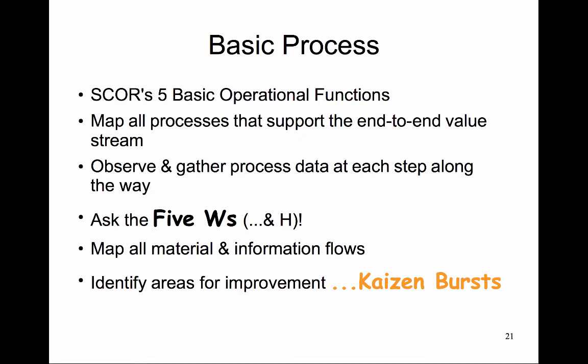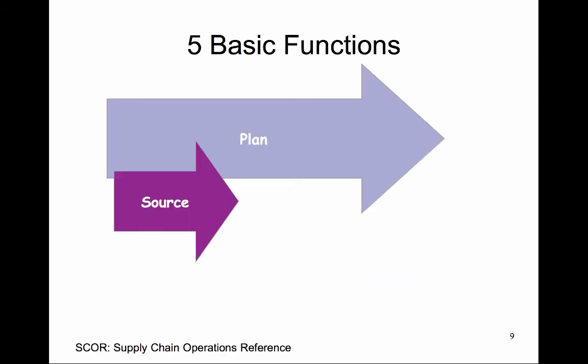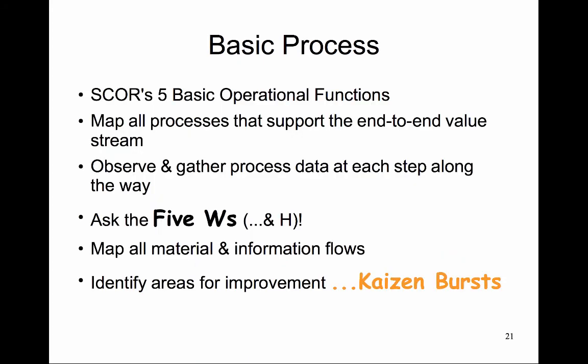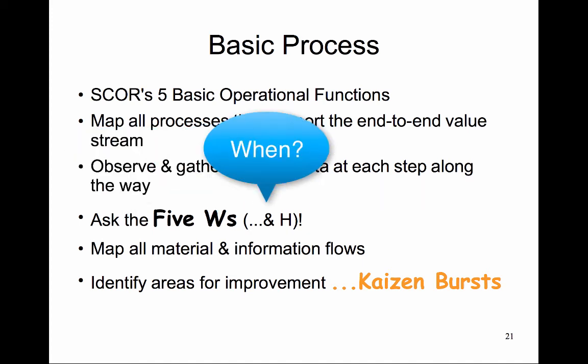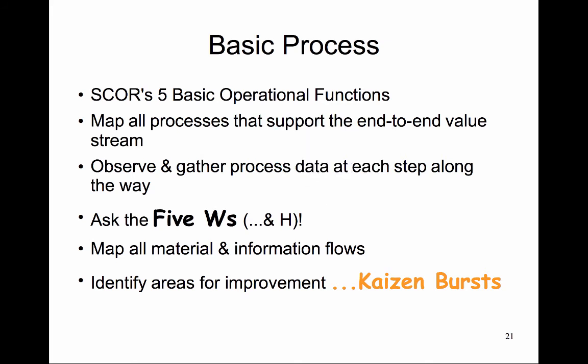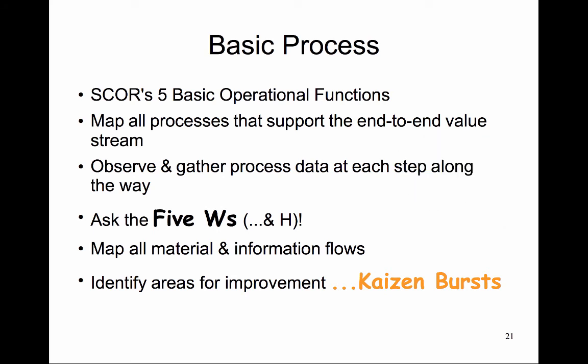The basic process of a VSM exercise starts with the five basic operational functions from SCOR: Plan, Source, Make, Deliver, and Return. Map all the processes that support the end-to-end value stream. Observe and gather process data at each step — such as availability, schedules, processing and lead times, demand requirements, and inventory (raw, WIP, and finished). Ask the five W's and H: What are the main tasks? Where and when does the process take place? Why does the process happen? Who is involved? And how long does the process take? Then map all the material and information flows, and identify areas for improvement — the Kaizen bursts.